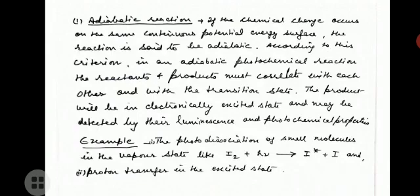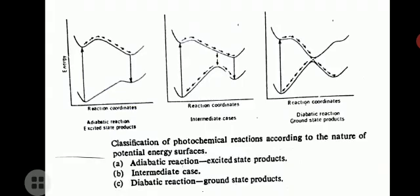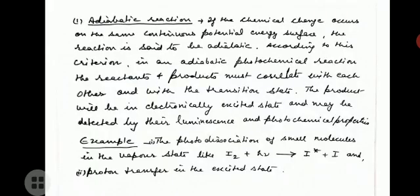The first is the adiabatic reaction. If the chemical change occurs on the same continuous potential energy surface, the reaction is said to be adiabatic. According to this criterion, in an adiabatic photochemical reaction the reactants and products must correlate with each other and the transition state. The product will be in an electronically excited state and may be detected by luminescence and photochemical properties. Examples are the photo dissociation of small molecules in the vapor state like iodine, and proton transfer in the excited state.